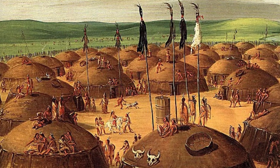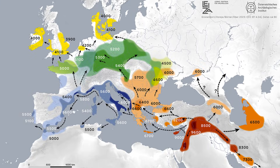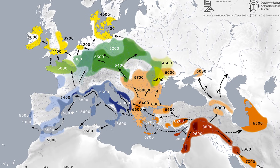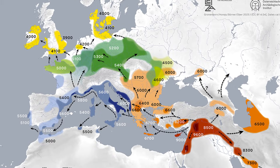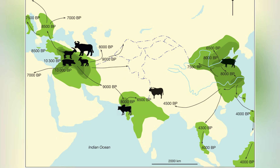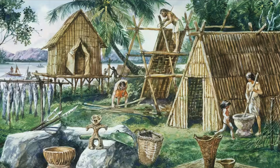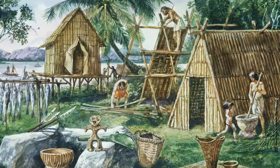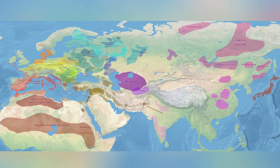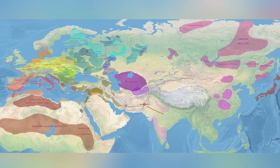Neolithic Expansion. The Neolithic expansion refers to the spread of farming populations from early agricultural centers into surrounding regions, beginning around 10,000 years ago. Agriculture first developed independently in places such as the Fertile Crescent, the Yellow and Yangtze River Valleys, and parts of Africa and the Americas. As farming proved more reliable than hunting and gathering, agricultural communities grew rapidly and migrated into new territories. These movements carried domesticated plants and animals, new technologies, and settled village life into Europe, South Asia, East Asia, and Africa.